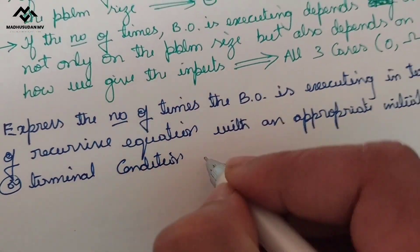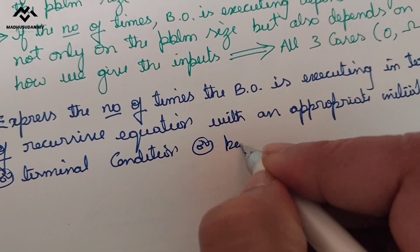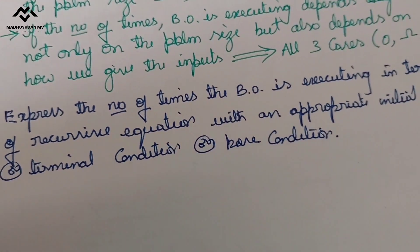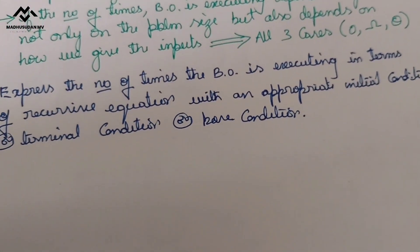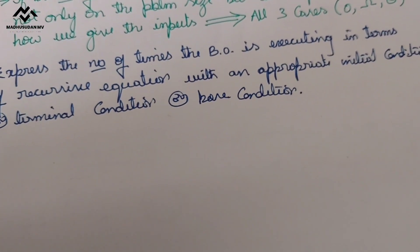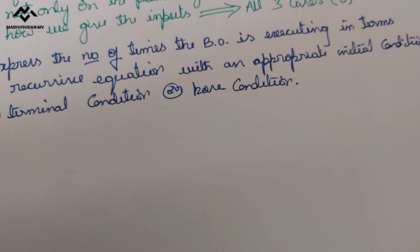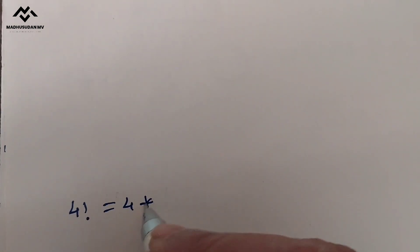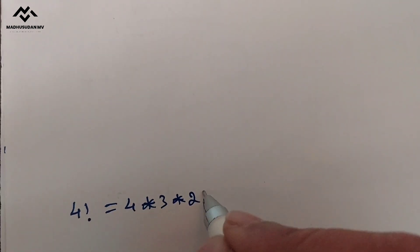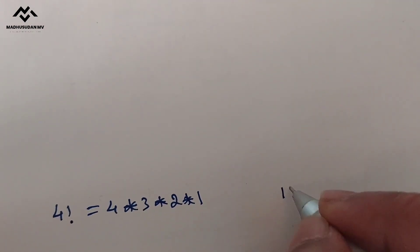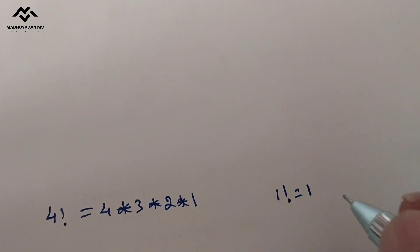The initial condition is also called the base condition. Let us understand this with an example — finding the factorial of 4. We know that 4 factorial equals 4 × 3 × 2 × 1. We know the initial value: 1 factorial equals 1.